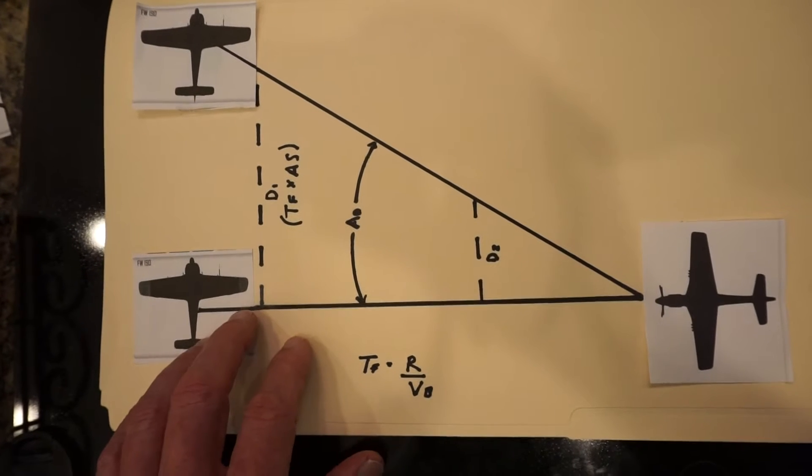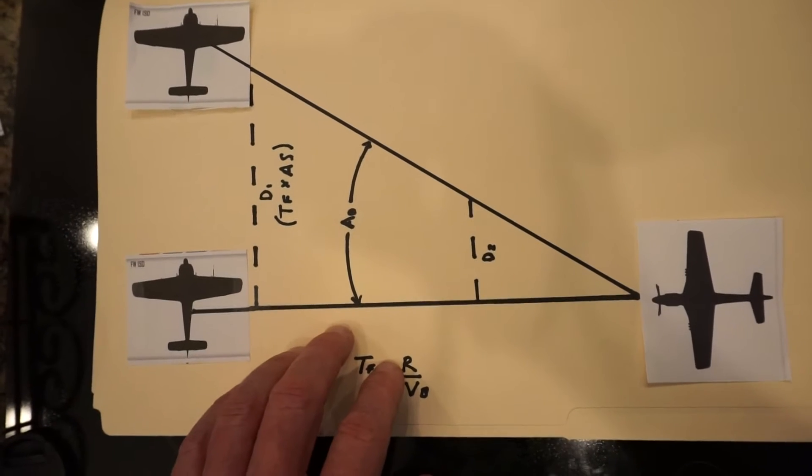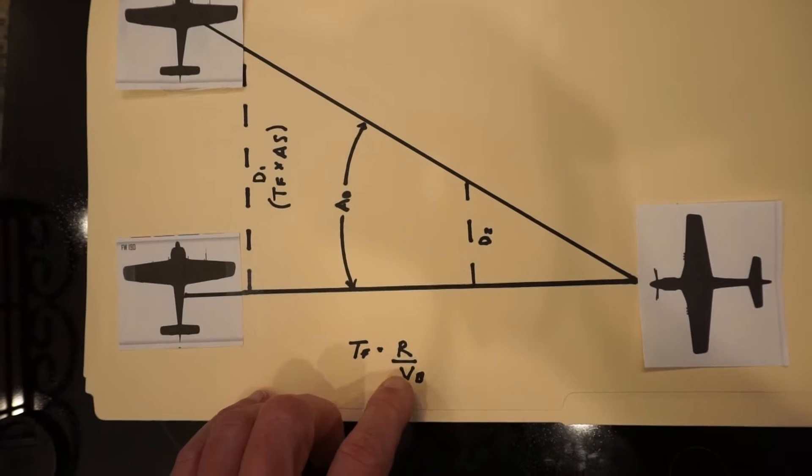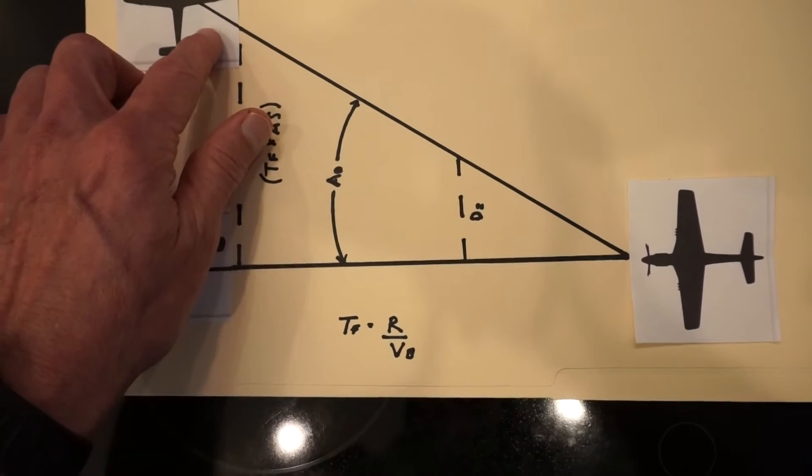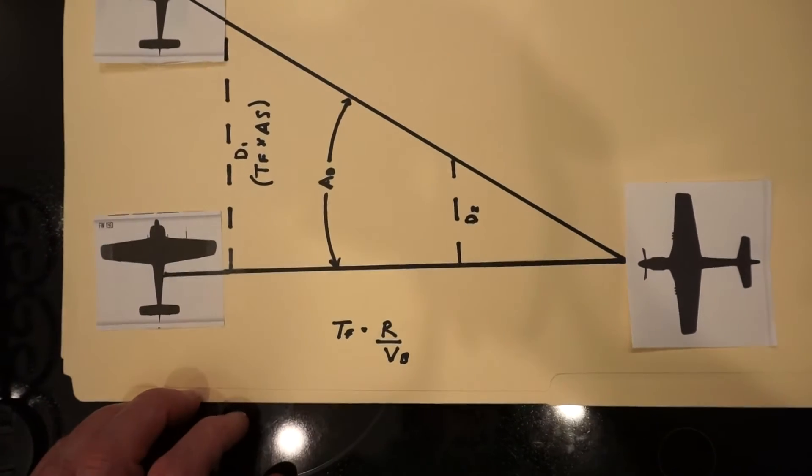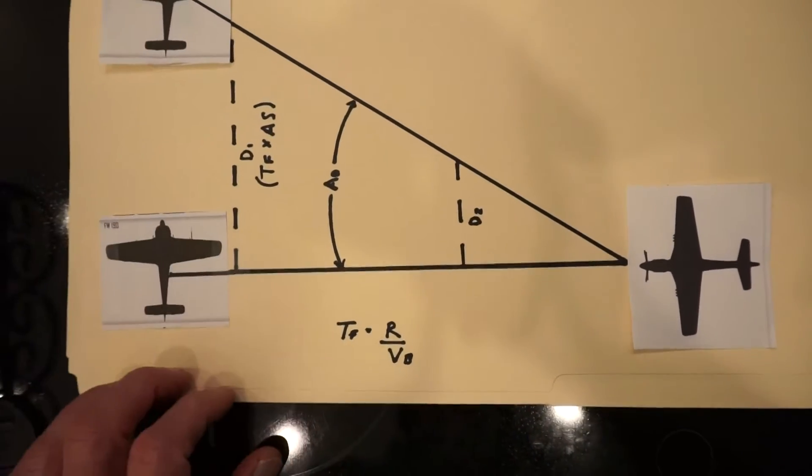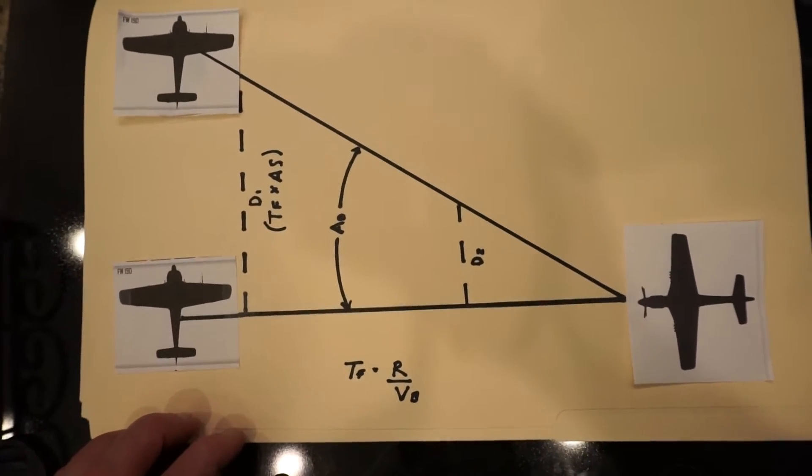Therefore the range between you divided by your bullet speed is the time factor and this time the enemy airspeed gives you the distance the enemy aircraft will travel or the lead or how much out in front you must aim to successfully strike the moving aircraft.